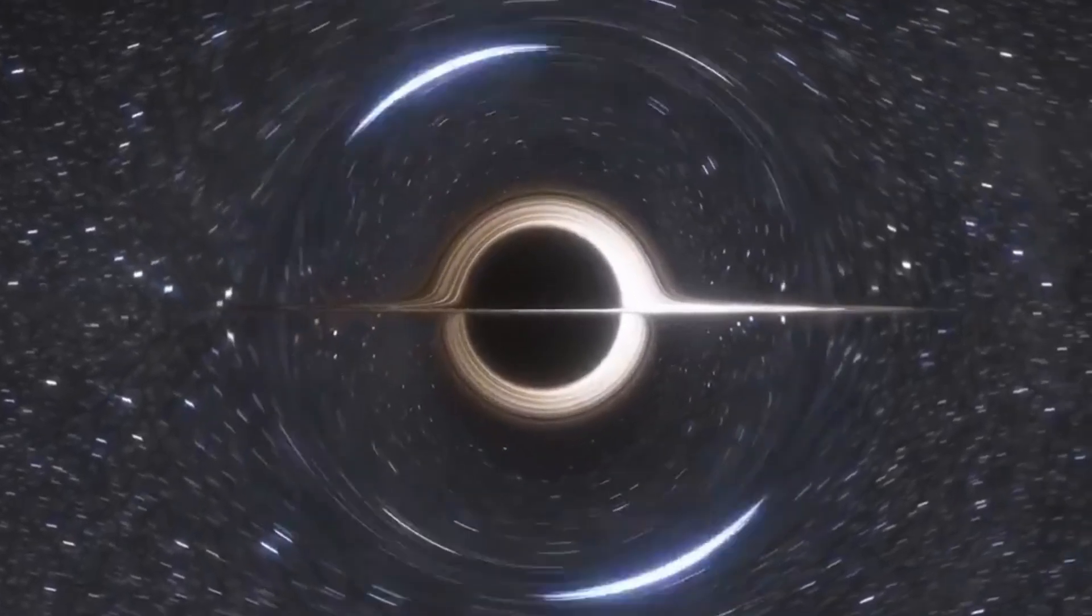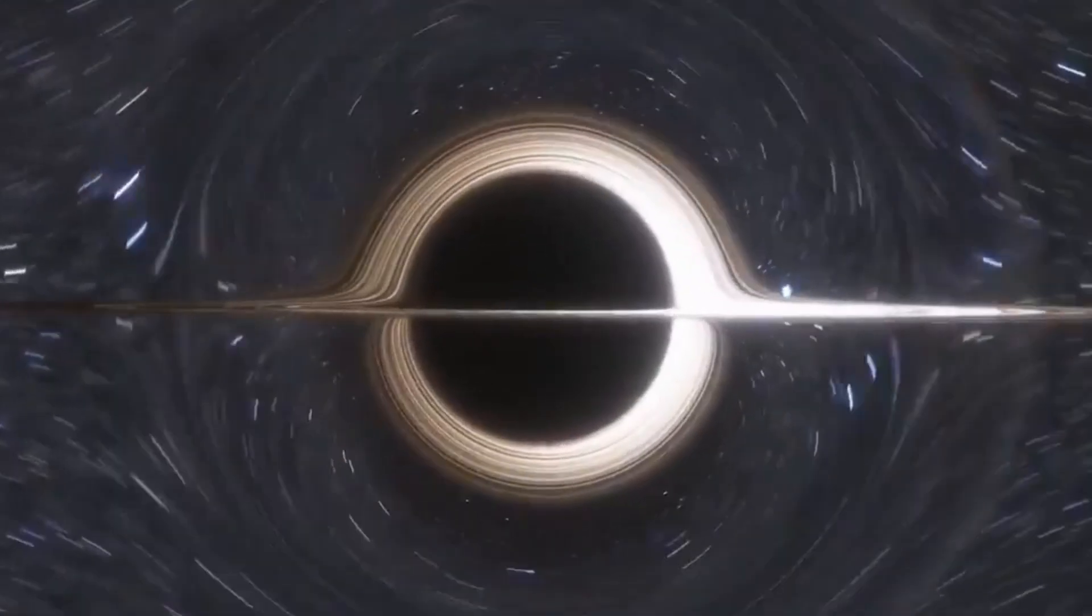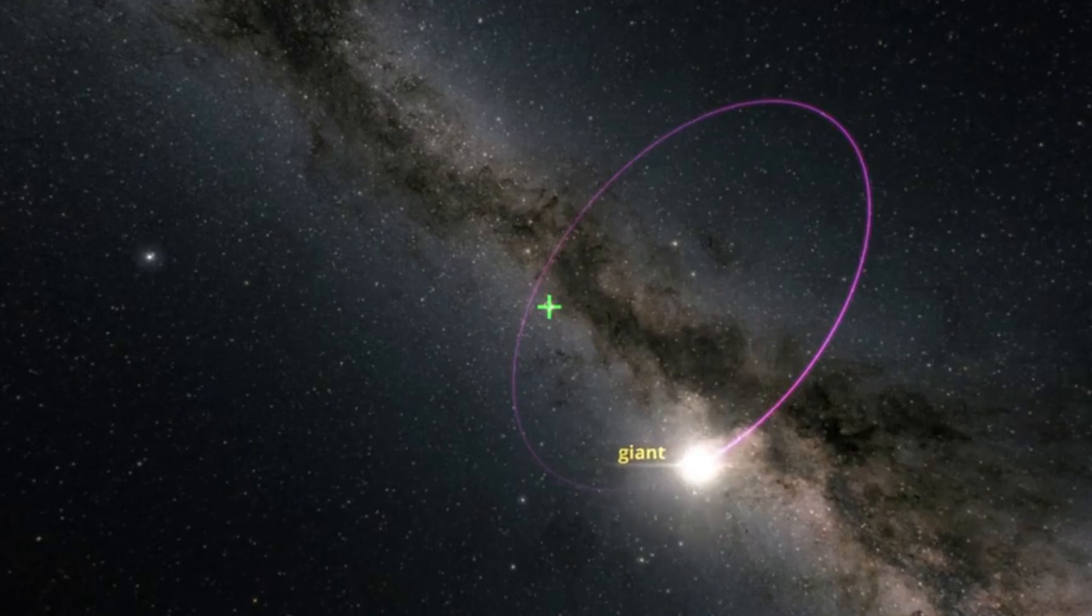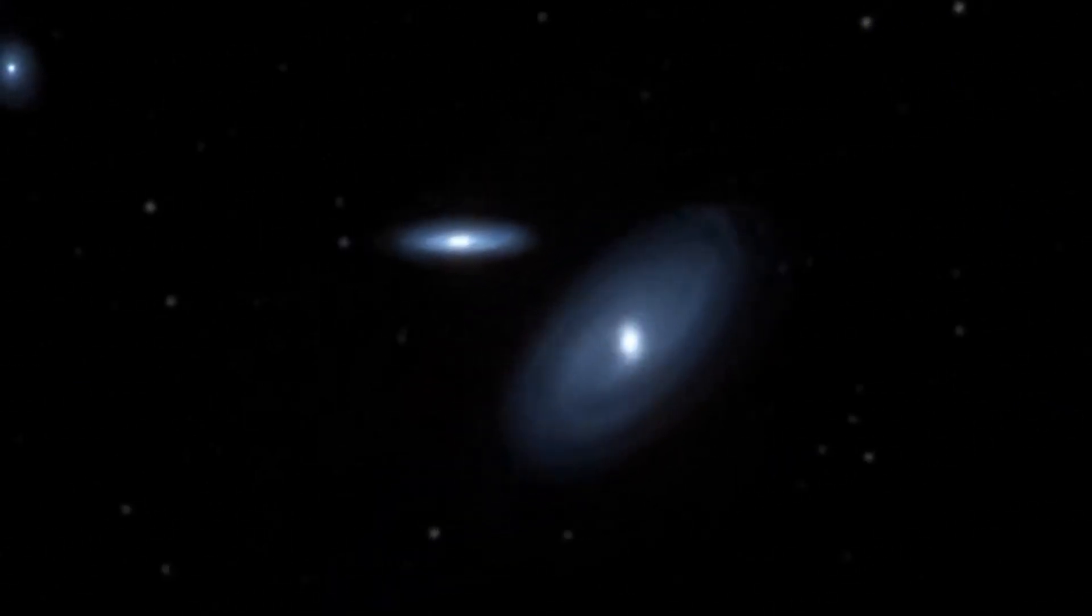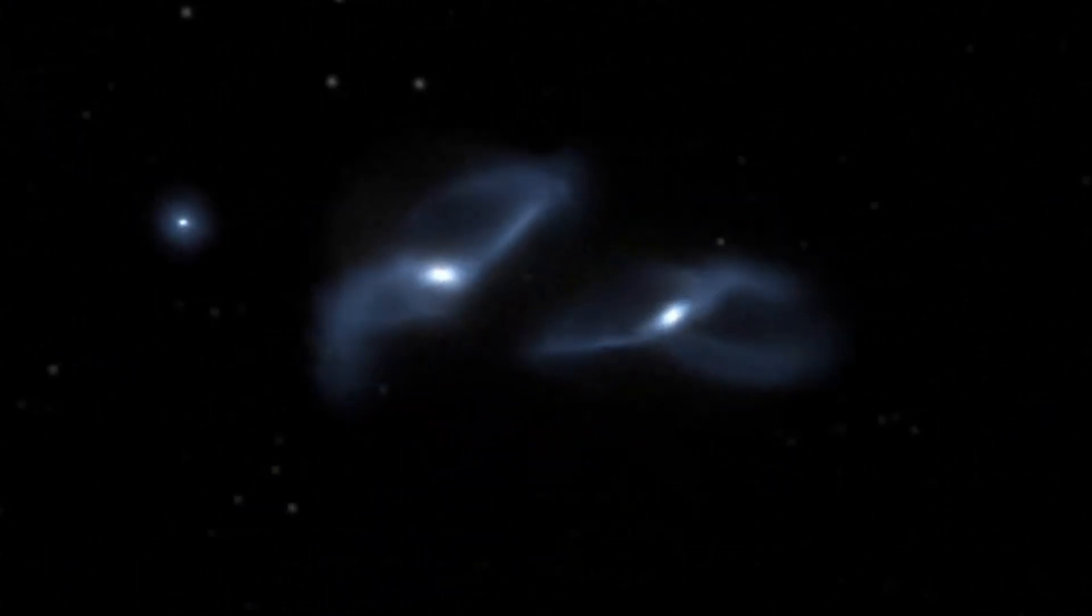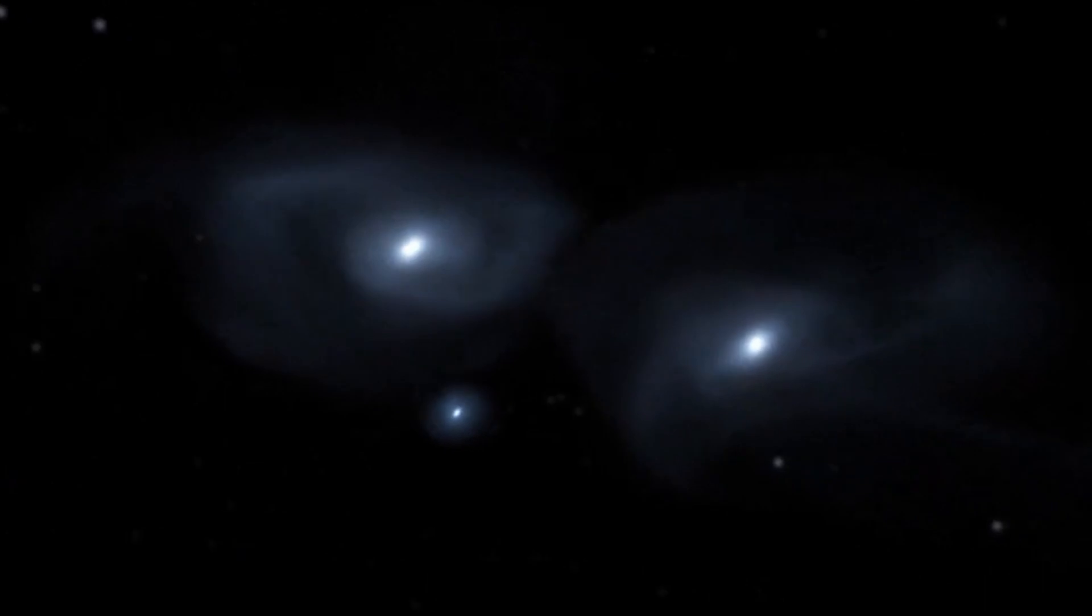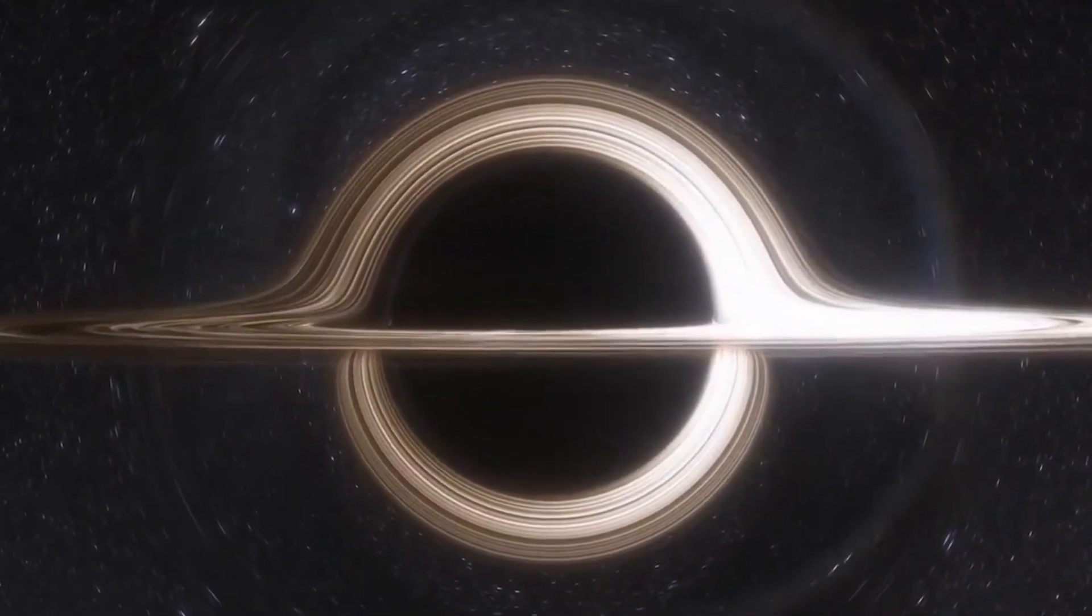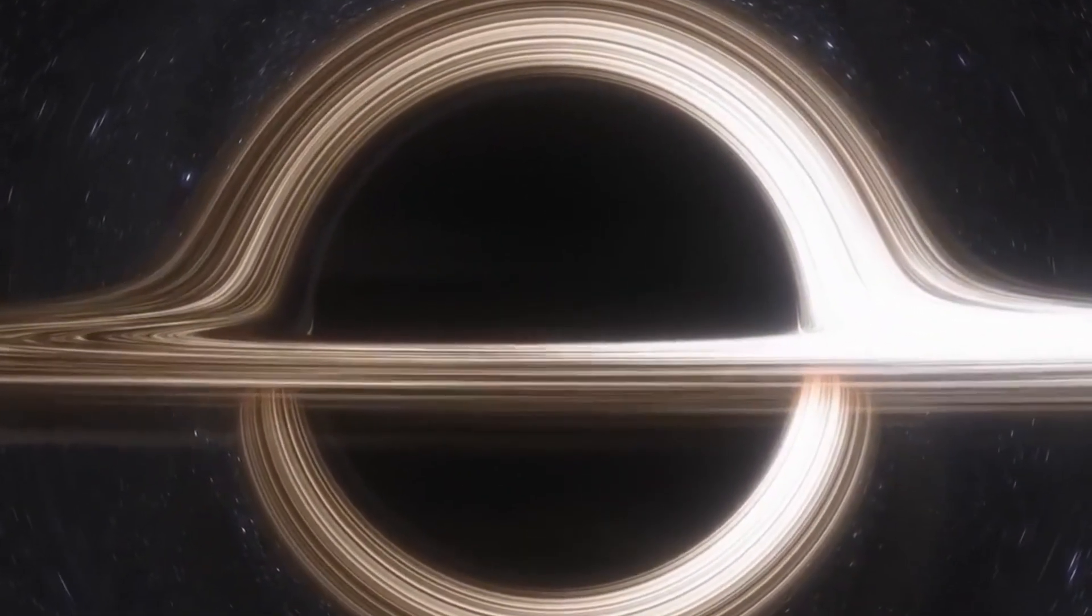Consider a scenario where a stellar mass black hole has a companion star, but they are too far apart for the black hole to pull material from its partner star. In such situations, the black hole and its companion star orbit around a point that represents the system's center of mass. This concept applies even when a star is orbited by a lighter companion, like another star or a planet. This orbit around the center of mass causes a noticeable wobble in the movement of the star, which astronomers can observe.